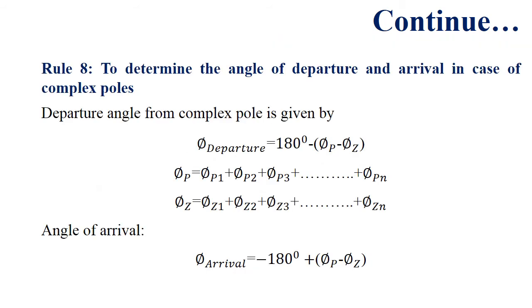If we have complex poles in our network, Rule 8 gives information about the angle of departure and arrival. The departure angle from complex poles is given by the formula listed, where φ_p basically equals the sum of all the angles subtended by all the other poles. The angle of arrival is also listed in the slide.